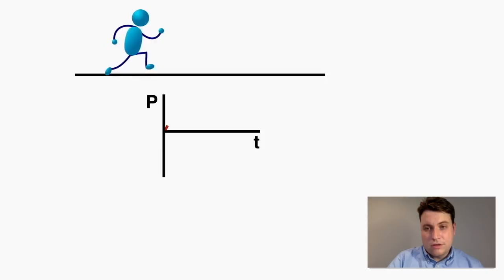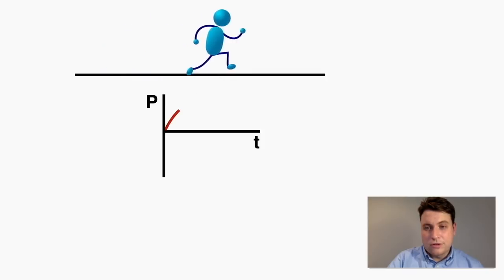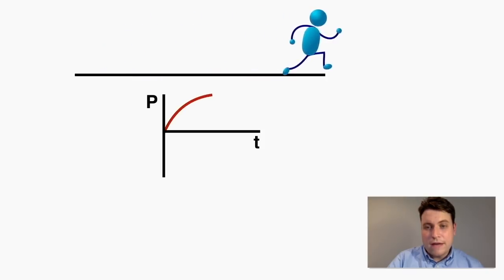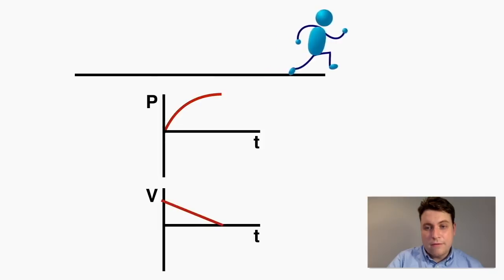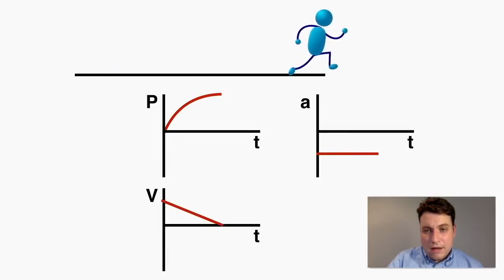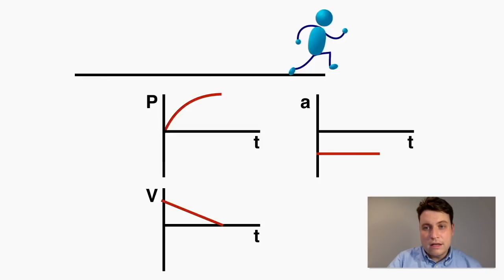For example, this graph here is a position graph of a person running very fast and then slowing to a stop, and we can also understand what the velocity and acceleration graph for that same motion would look like. The velocity graph would look like this, and the acceleration graph would look like this. So there should be a way of getting information about these graphs from each other — they should all be related in some mathematical way, and that's what this lecture is going to talk about.